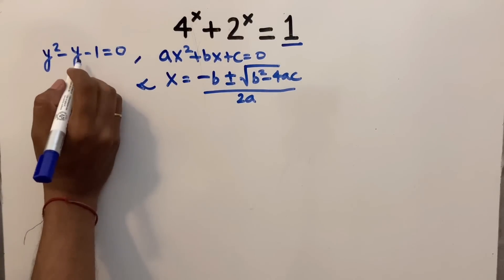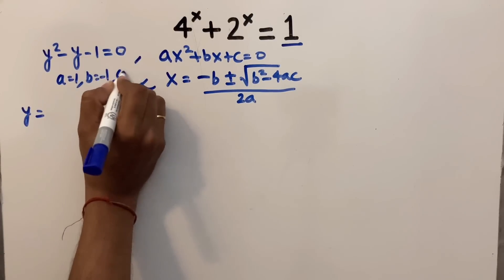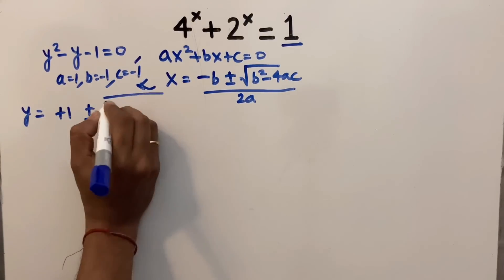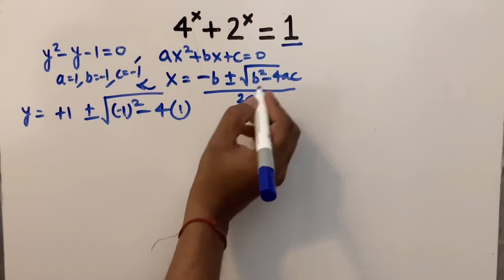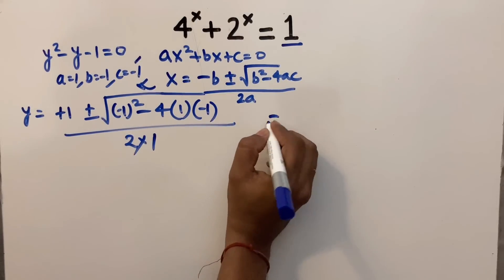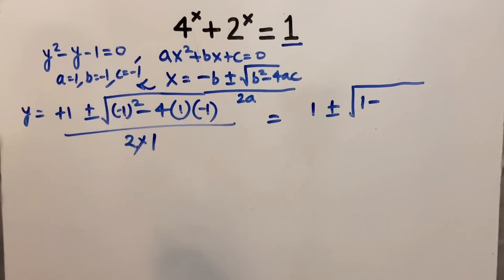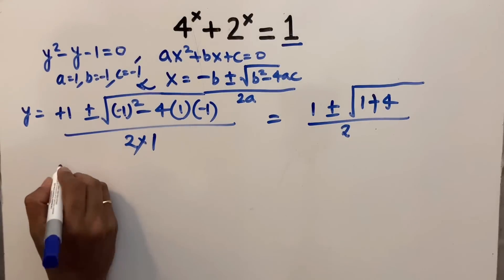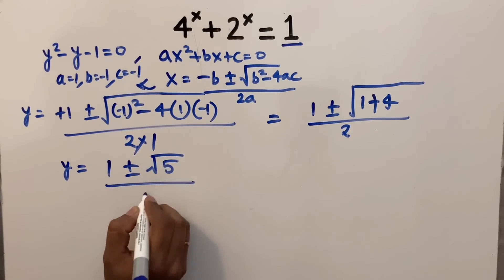For this quadratic equation y² - y - 1 = 0, the coefficients are: a equals 1, b equals minus 1, and c equals minus 1. So y equals minus b, which is plus 1, plus or minus square root of (b² minus 4ac), that is (minus 1)² minus 4 times 1 times (minus 1), divided by 2 times 1. This gives y equals 1 plus or minus square root of (1 plus 4) divided by 2.